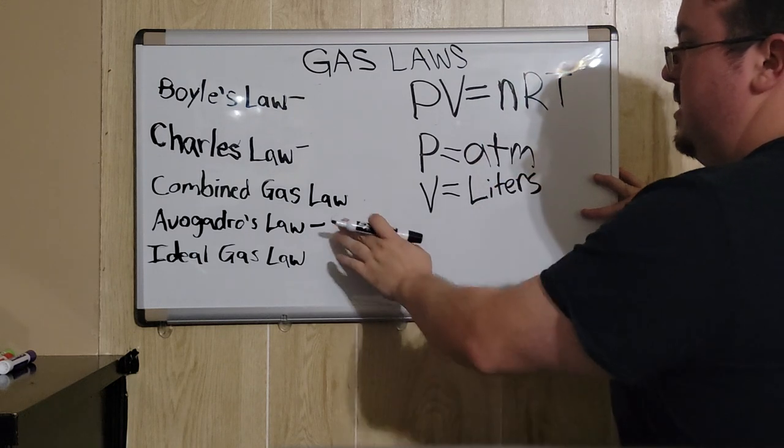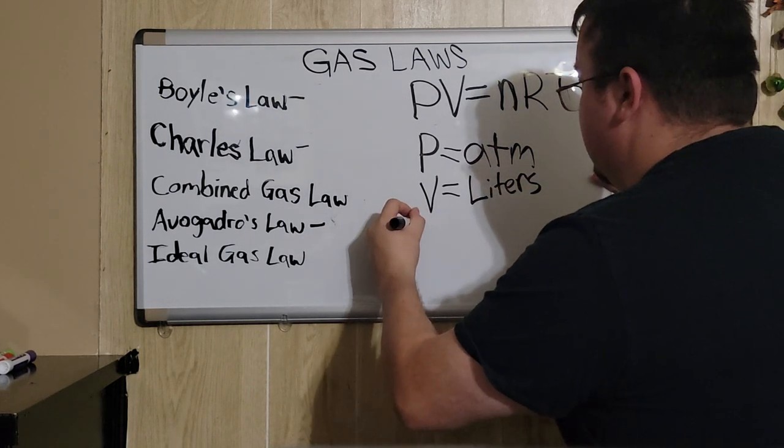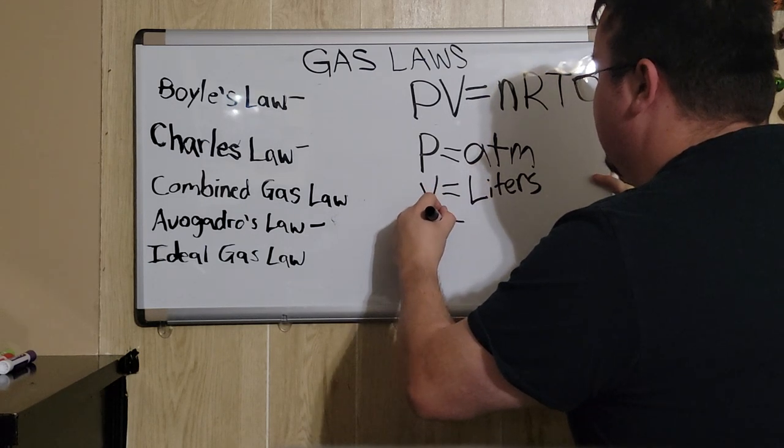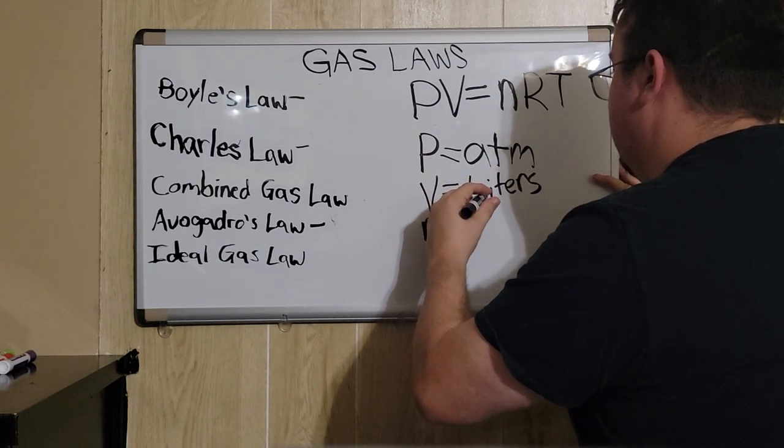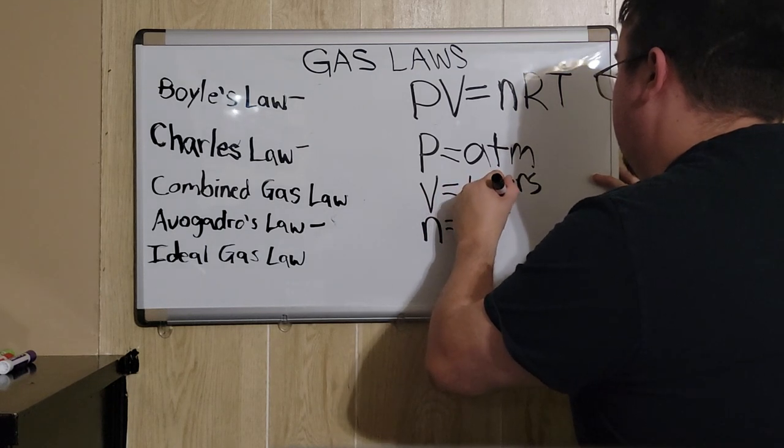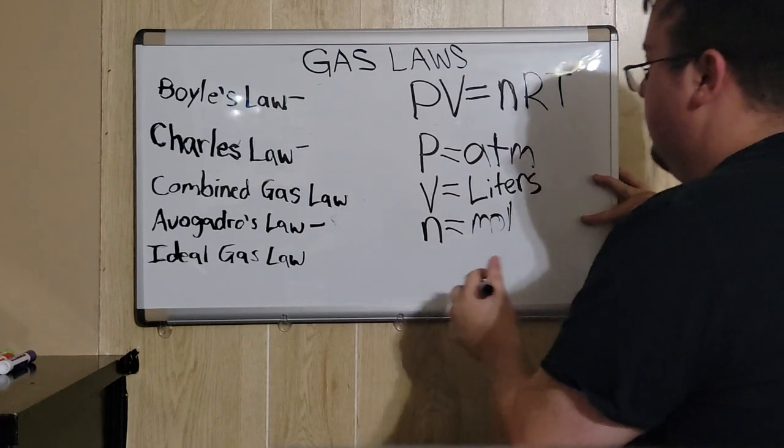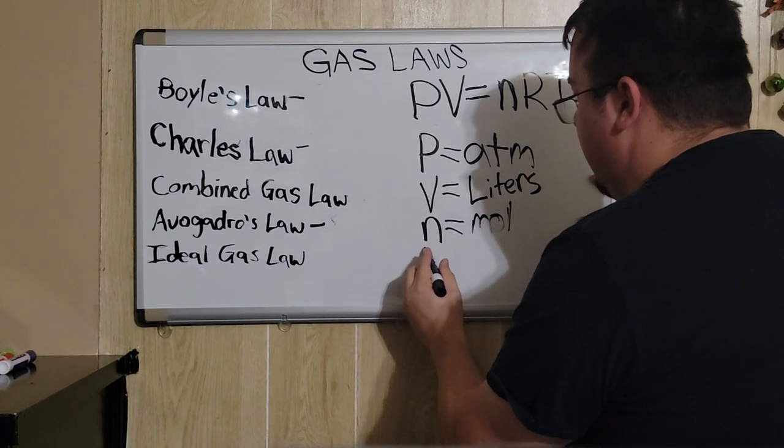As we established with Avogadro's law, N represents the number of moles of the gas. Then, you have T, which is temperature, which is always in Kelvin.